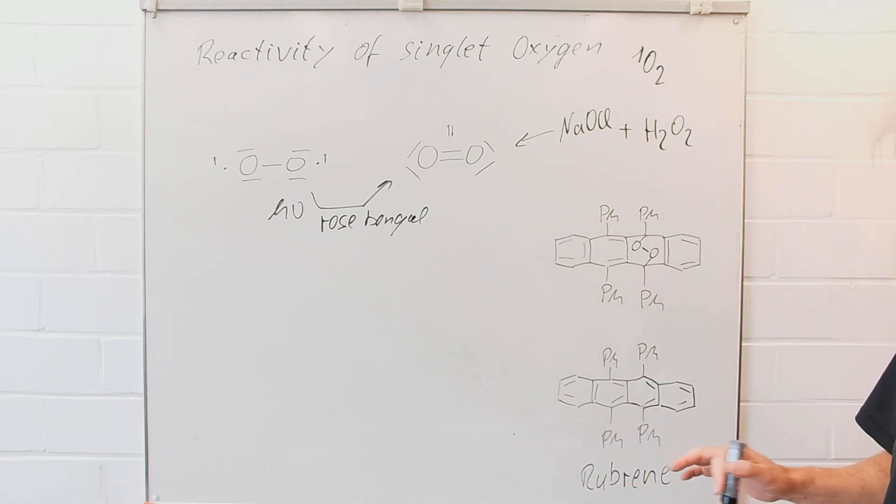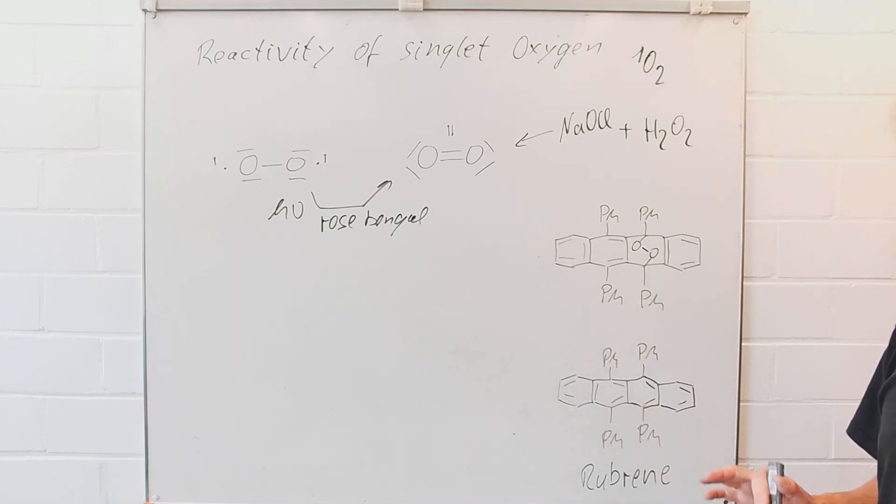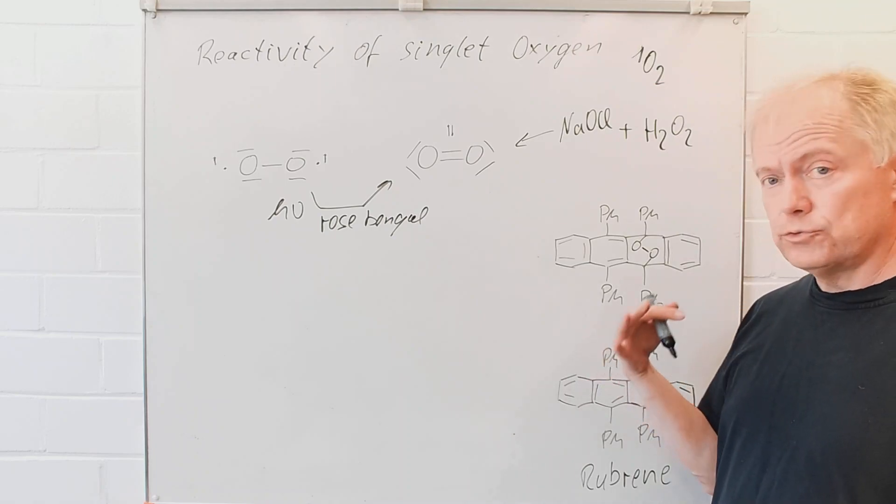And this interesting molecule called rubrene is capable to help us. It is itself also similar to Rose Bengal, the sensitizer. And if you have this red compound in solution,